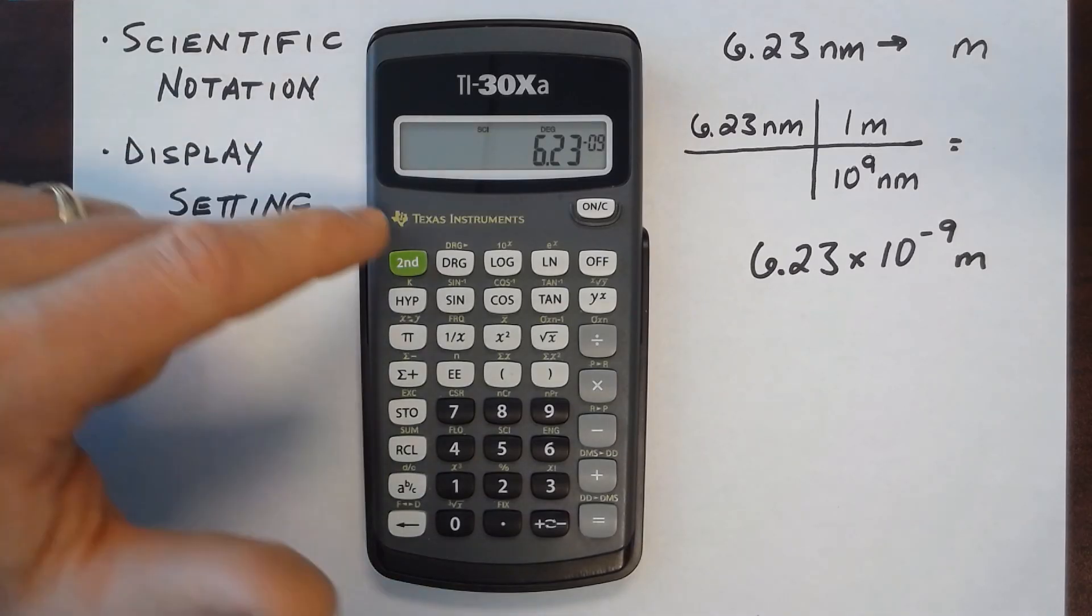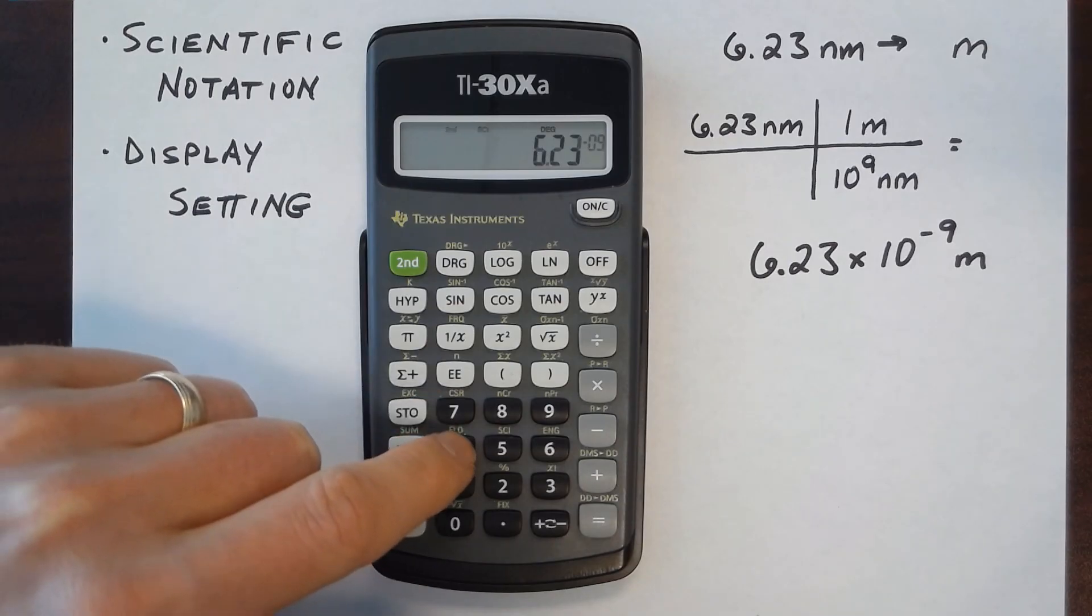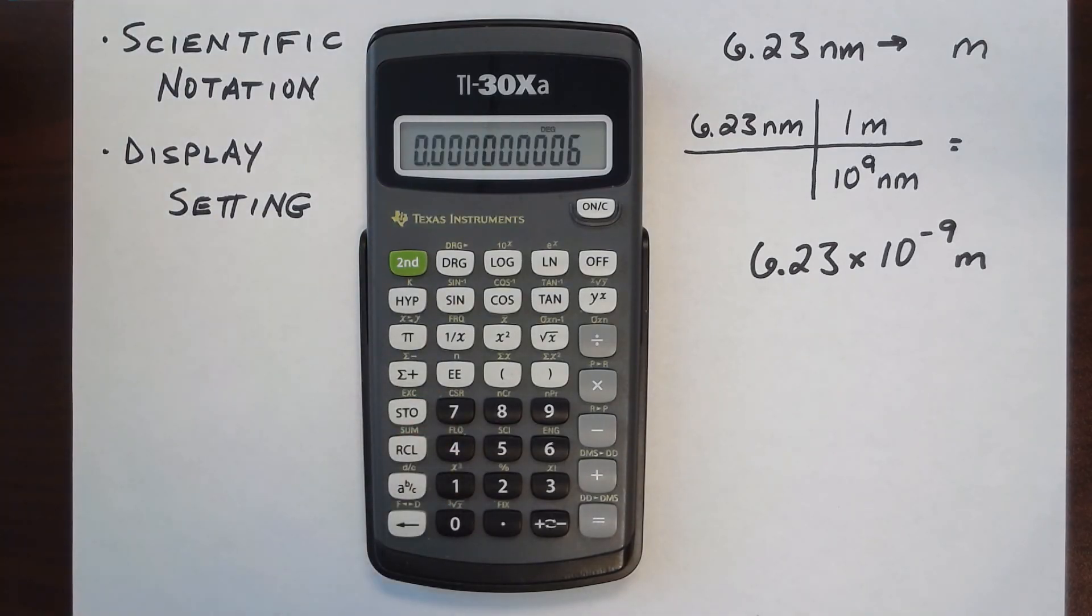If I want to go back to floating, I can hit 2nd FLO to go back to the floating decimal display.